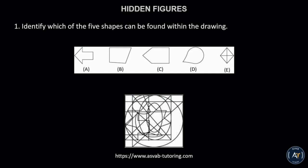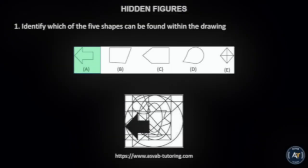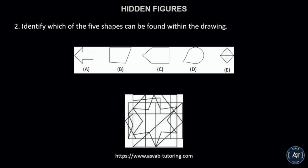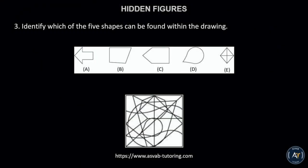Number 1. Identify which of the 5 shapes can be found within the drawing. The correct answer is letter A. Number 2. Identify which of the 5 shapes can be found within the drawing. The correct answer is letter B. Number 3. Identify which of the 5 shapes can be found within the drawing. The correct answer is letter D.